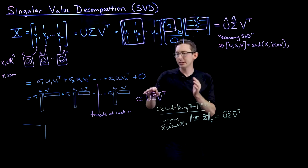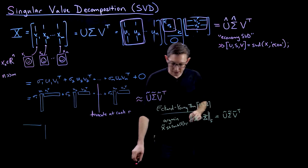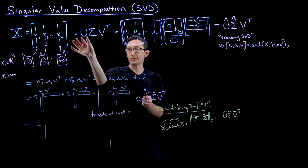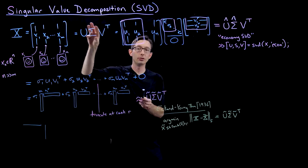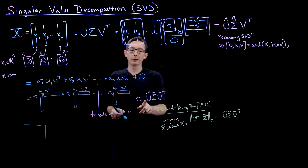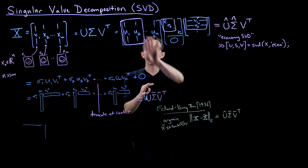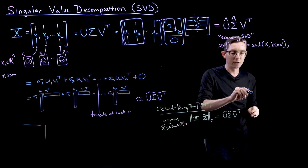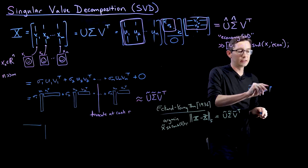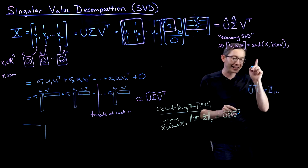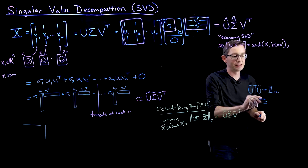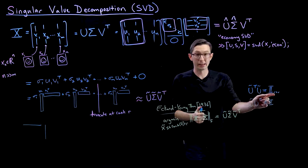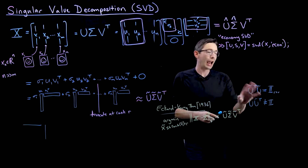We call this U-tilde sigma-tilde V-tilde in the book. One last thing: the full U and V are unitary — U is N×N, V is M×M, and U·Uᵀ = Uᵀ·U = I. But when you truncate at rank R and throw away some columns, these are no longer square matrices. It's still true that U-tilde ᵀ·U-tilde = I (the R×R identity matrix), but U-tilde·U-tilde ᵀ is NOT the identity matrix. This is really, really important.